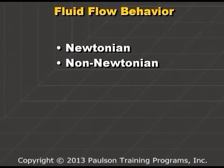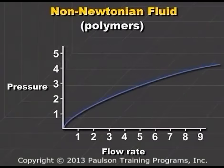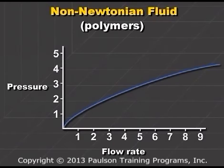Some fluids, including most polymers, have a different kind of flow behavior called non-Newtonian flow. Unlike Newtonian fluids, the viscosity of non-Newtonian fluids is affected by the flow rate. A typical pressure versus flow rate graph for a plastic looks like this.